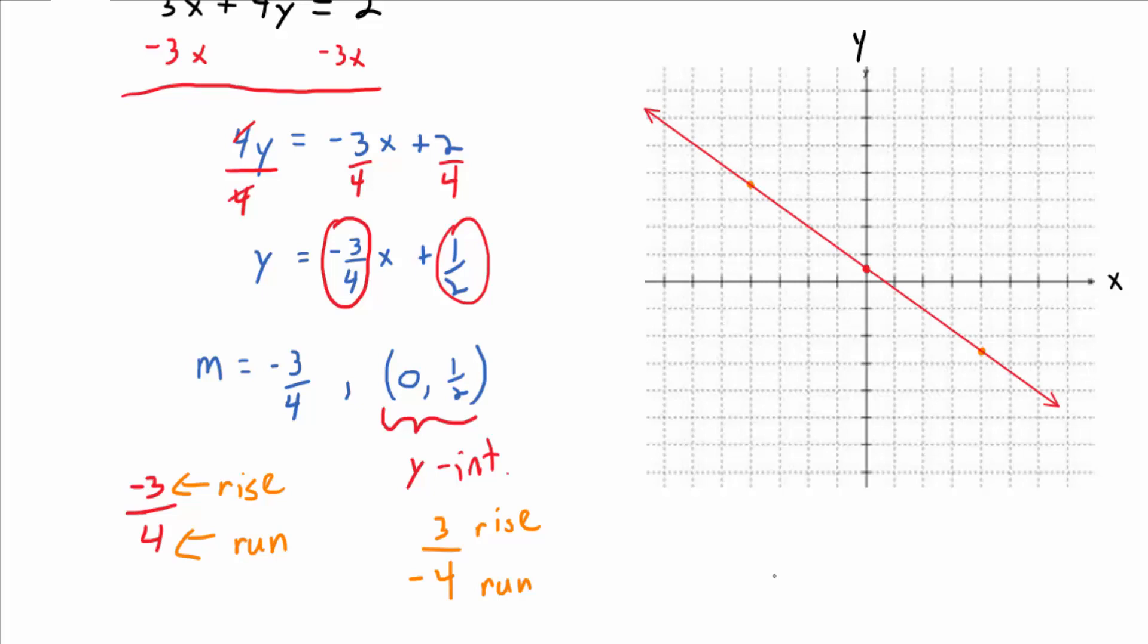Okay. So the shortcut, to summarize, make sure you solve it for y if it's not already solved for y, so you can identify the slope and the y-intercept. Plot the y-intercept, and then use rise over run to get to another point on the graph. I got to two different points. I only really needed this point, or the other point, right? Then draw the line between them, and that's it. That's the shortcut for graphing a line.